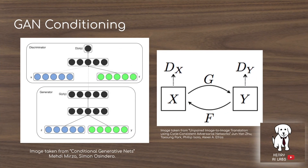This relates to the idea of conditioning GANs. One way of doing this is to integrate the class label into the random vector input to the GAN. For example, if you're trying to generate a dog rather than a cat, you might give it the one-hot encoded class label. Another idea is conditioning GANs with image-to-image translation, which is what we're doing here — going from the pixel map to the photorealistic image.